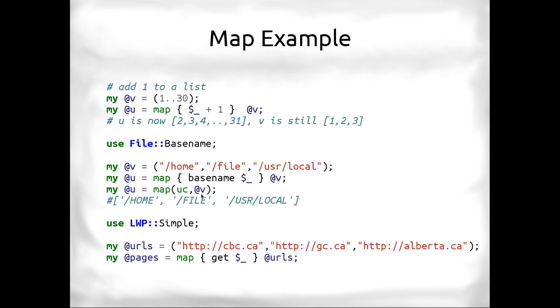So it'll give us the base name. We can also apply map in a different way, by giving a reference to the function directly, instead of giving it a block. But you've got to remember, you've got to know the name here. So here I'm giving it uppercase to v, and it'll map those strings to home, file, user, local, all capitalized. But you need to know the name of the function.